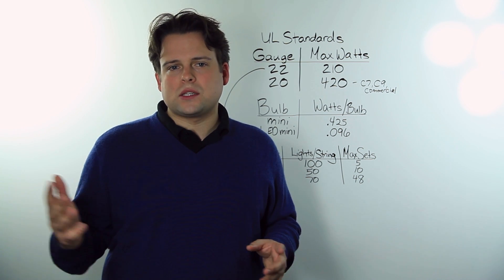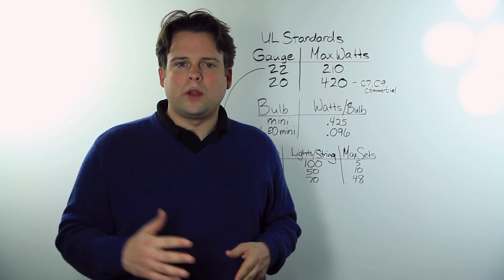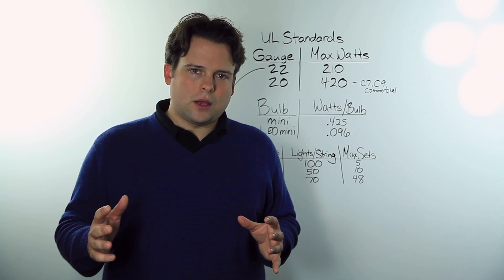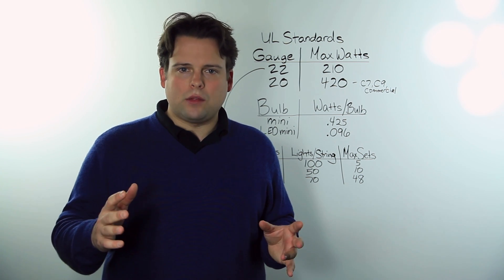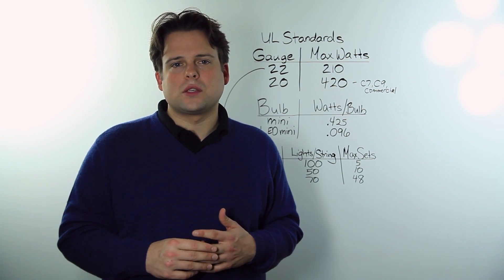The factors that influence Max Sets Connected include the individual bulb wattage, the light count, and the wire gauge. Bulb wattage will vary between incandescent and LED lights and will also vary based on the size of the bulb.